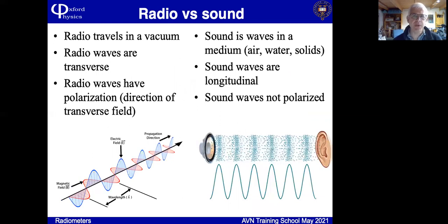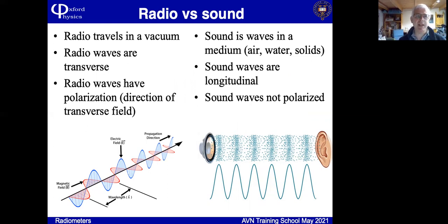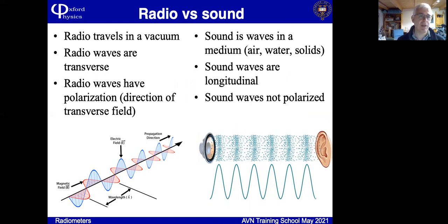It's important to remember the distinction between electromagnetic radiation and sound waves. Electromagnetic radiation doesn't need a medium to support it. It's a self-supporting wave in the electromagnetic field and travels happily through a vacuum. Unlike sound, which is a wave in a medium that actually has to be something supporting the wave.